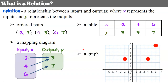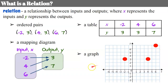Our fourth representation is a graph. We can graph our ordered pairs: negative 2, 3; 4, 3; and 6, 7. So all of these — ordered pairs, table, mapping diagram, and graph — show a relationship between an input and an output.